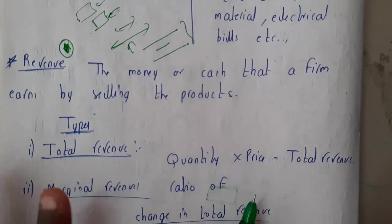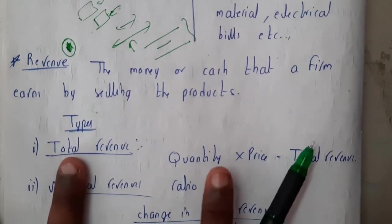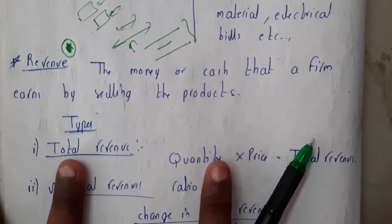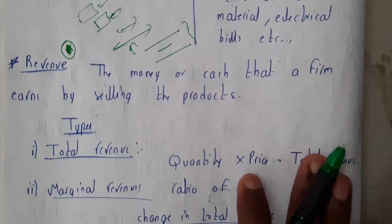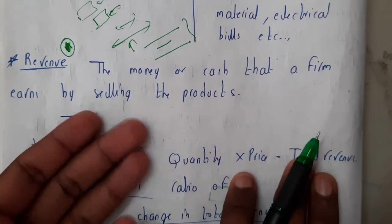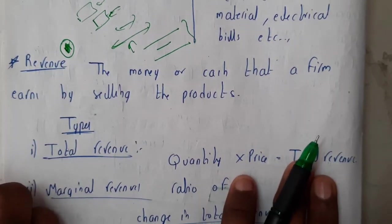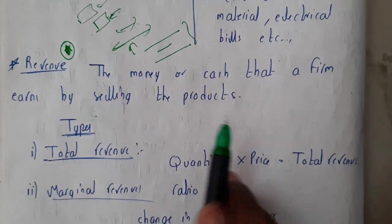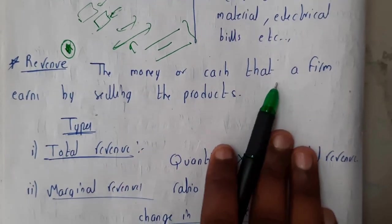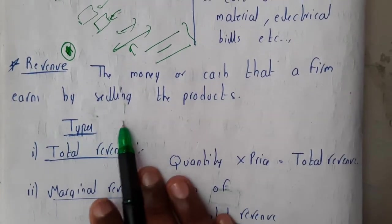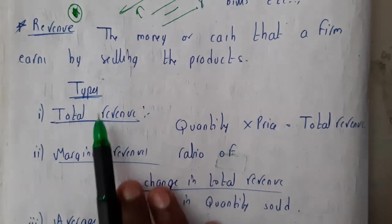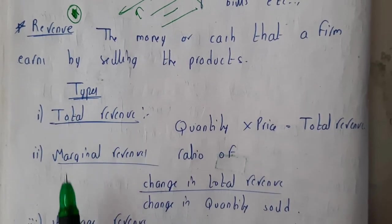Now let us go through revenue. Please remember that revenue and profit are completely different, so please don't confuse between them. Revenue is the amount that you get out of the business by selling the products — the money or cash that a firm earns by selling products is revenue.